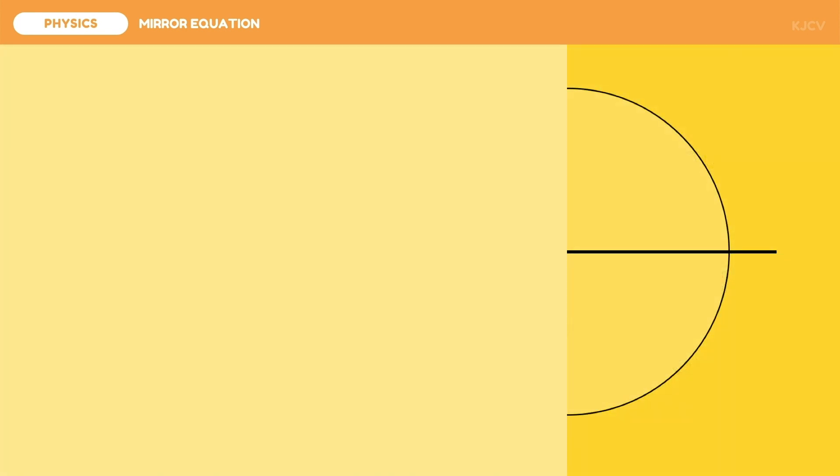Ray diagrams do not provide us exact information on an image's characteristics since we are limited to qualitative descriptions of images. For example, this object produced an image in front of this concave mirror. We know that this image is real, inverted, and reduced, but we do not know how exactly far it is from the mirror, and we also do not know how much the image has changed its size relative to the object. To quantify this information, we can get the actual measurements of the object and image relative to the mirror's vertex to have a quantifiable description of the image.